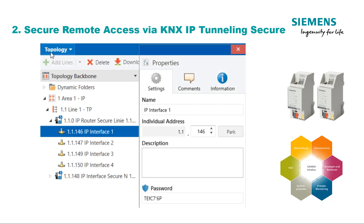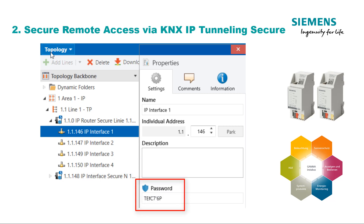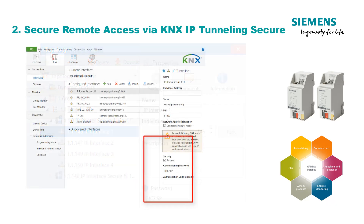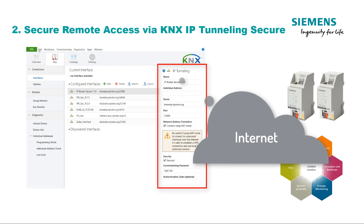Secure Remote Access via KNX IP Tunneling Secure. The IP Router Secure N14603 and the IP Interface Secure N14823 have four parallel secured tunnel connections. These allow secure access to KNX systems with ETS for maintenance and diagnostic purposes, and other software products such as visualizations. The first time an IP tunnel interface is used, the configured password of that IP tunnel interface is queried. Secure access can take place not only in the local network but also via the Internet.